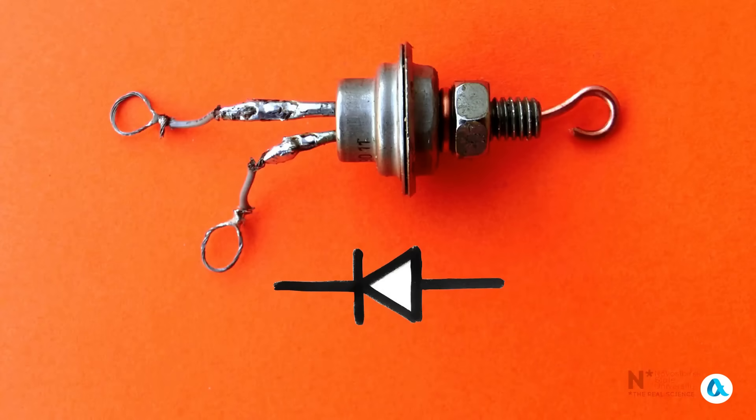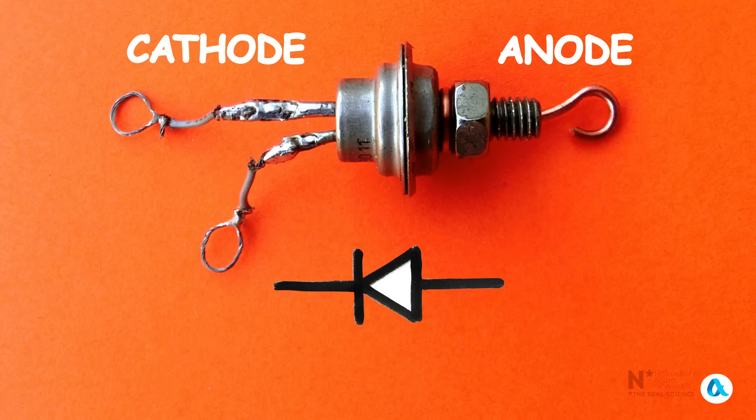This thyristor is similar to a diode, and just like a diode, it has an anode and a cathode. But in addition, on the side of the cathode, there is a third additional control electrode. And in circuit diagrams it is depicted with a line like this, connected to the cathode.